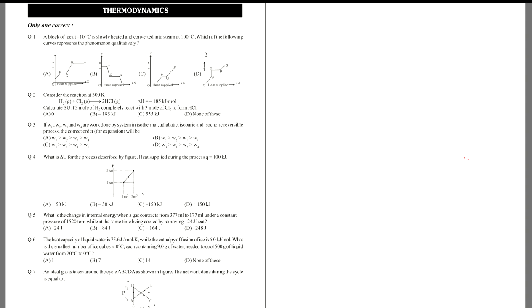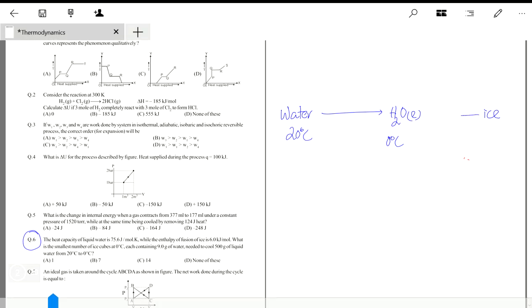Okay, so we'll be discussing today's doubts. The first question we'll discuss is question number six. In question six, you have water at 20 degrees Celsius which is to be cooled to liquid water at zero degrees Celsius. For this to happen, we need the heat released in the cooling process to be absorbed by ice.